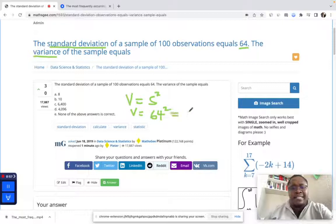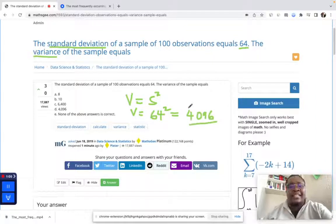Which would give us 4096. That would be the variance of the sample, because if we know the standard deviation, we can simply find the variance by squaring the standard deviation. That was straightforward.